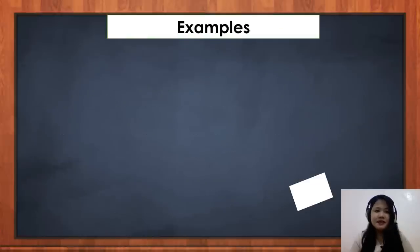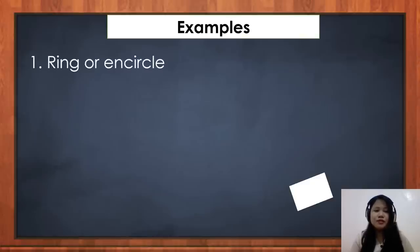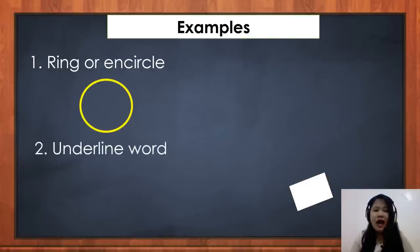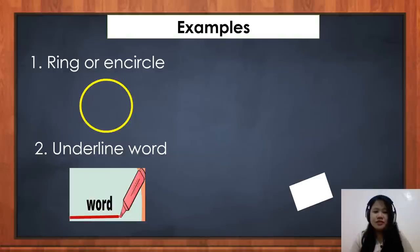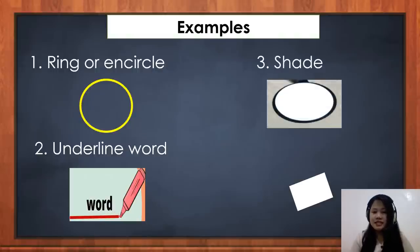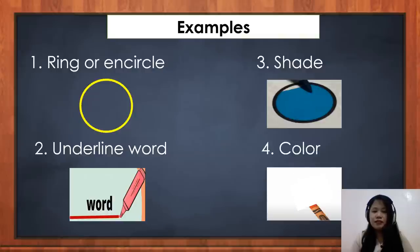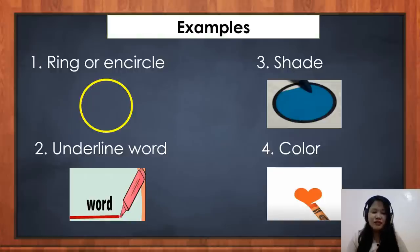Here are some examples of directions. First, ring or encircle. Number two, underline — you will draw a line under the word. Number three, shade — you will see the shaded part. And lastly, number four is color — you are so excited when your teacher tells you to color something.